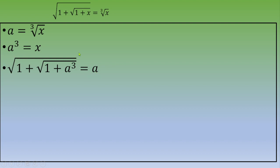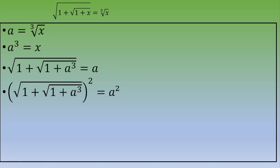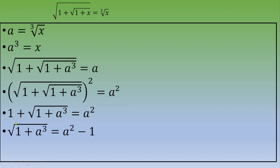We want to make the square root disappear. So we raise both sides to the second power, and we get: 1 plus square root of (1 plus a cubed) equals a squared. To isolate the remaining square root, we move the 1 to the other side: square root of (1 plus a cubed) equals a squared minus 1.